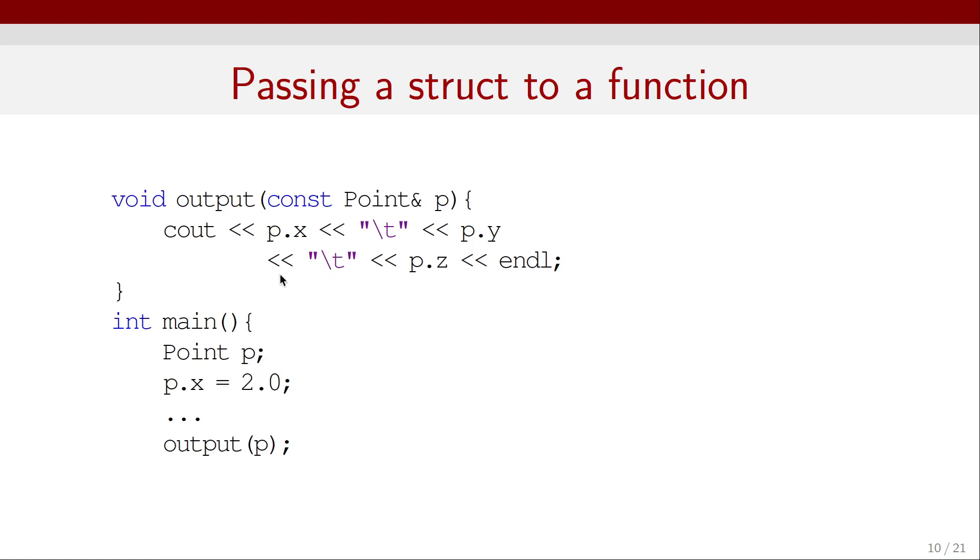And after that, we can declare point p and then modify its components. For example, p.x equals 2. And similarly, we can modify the y and z components. And then if we call this function output with argument p, then this is simply going to print the components of that point to the screen. So we just call it as a normal function and pass p as our argument.